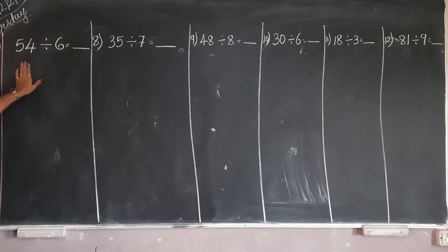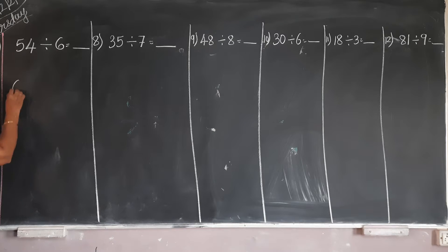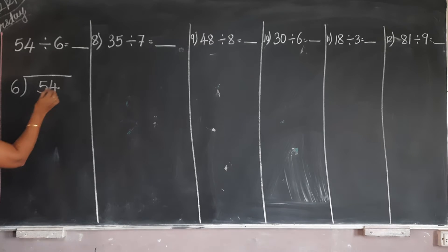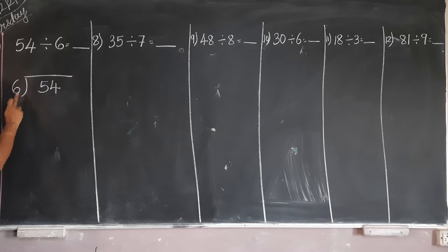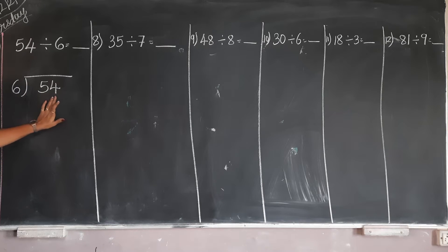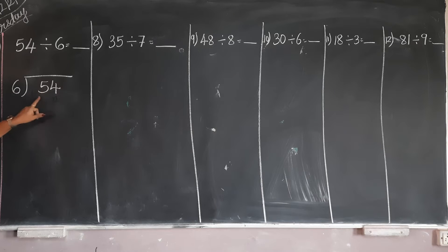The first one is 54 divided by 6. You have to write like this way: 54. This is the divisor and this is the dividend. 6 is the divisor and 54 is the dividend.